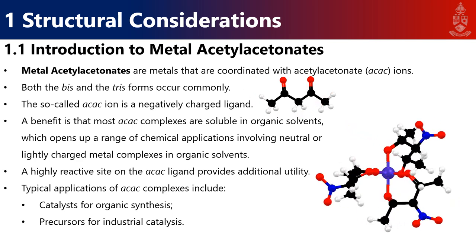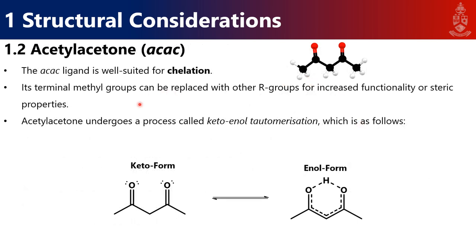The AC-AC ligand is well suited for chelation. Chelation is when one ligand coordinates to a metal center in more than one fashion. If one of the oxygens bonded to a metal ion wouldn't have been chelation, but if both oxygen atoms coordinate to the metal ion, you have a six-membered ring — and that is chelation. You can substitute any of the methyl groups and have extended forms of the AC-AC ligand, but for this practical we will only focus on AC-AC as drawn here.